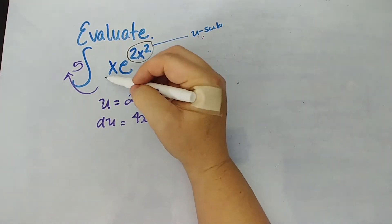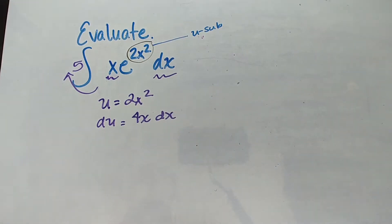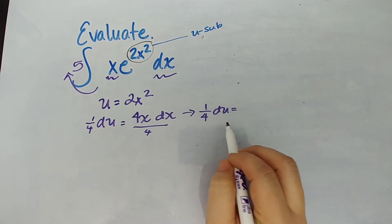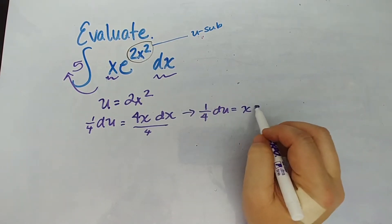Okay so let's see what I have. In my problem I have a dx and I have an x. I don't have a 4. That doesn't mean we can't use u substitution. That just means we have to isolate this x dx and we can do that by dividing by 4 multiplying by one-fourth.